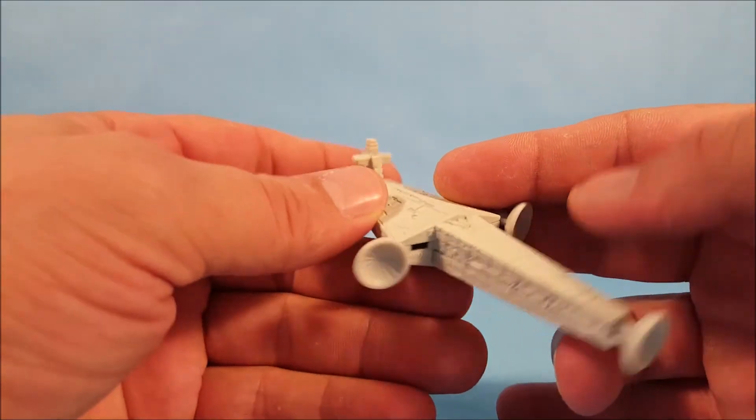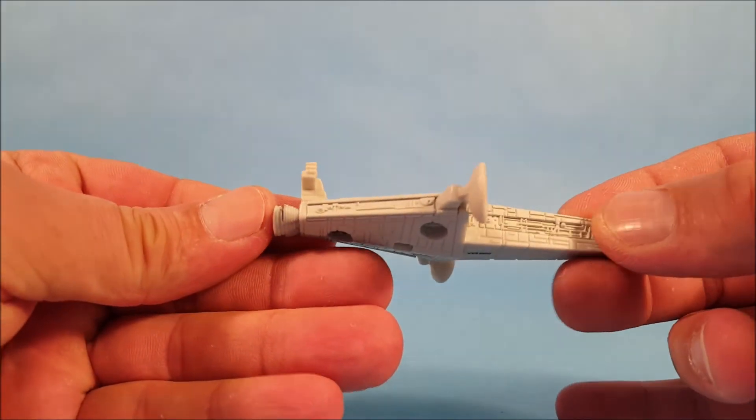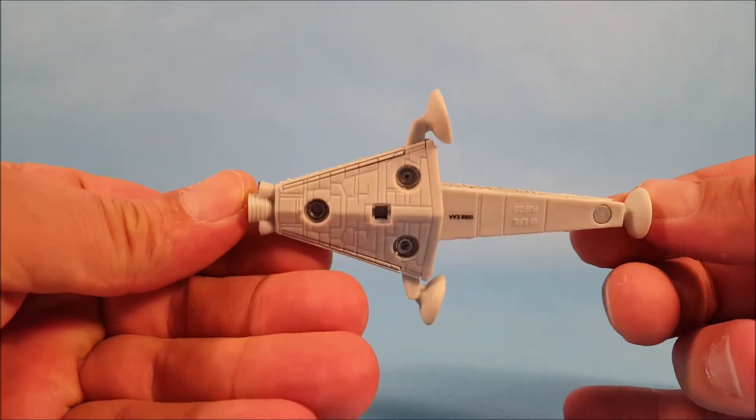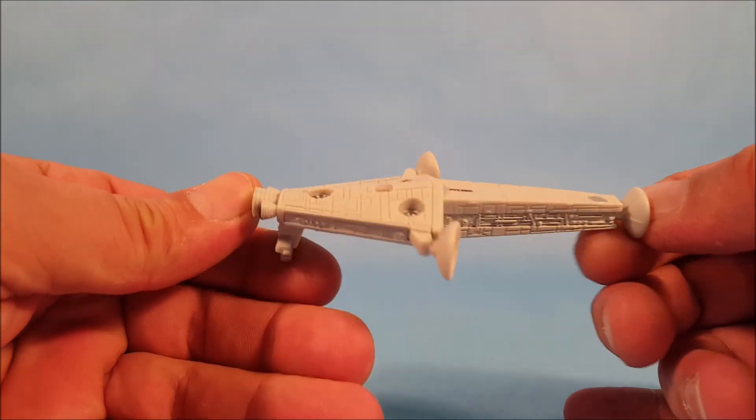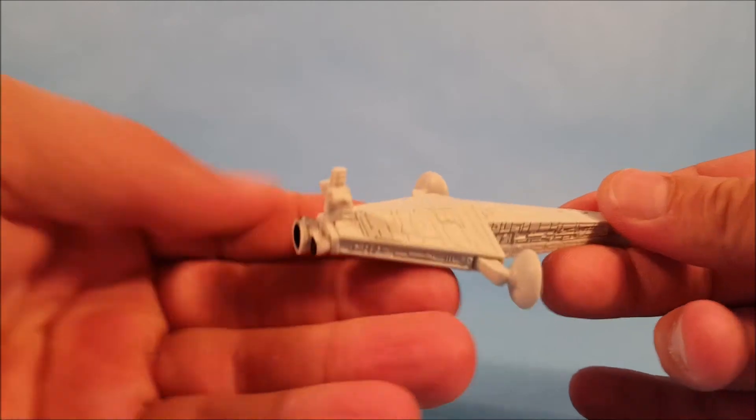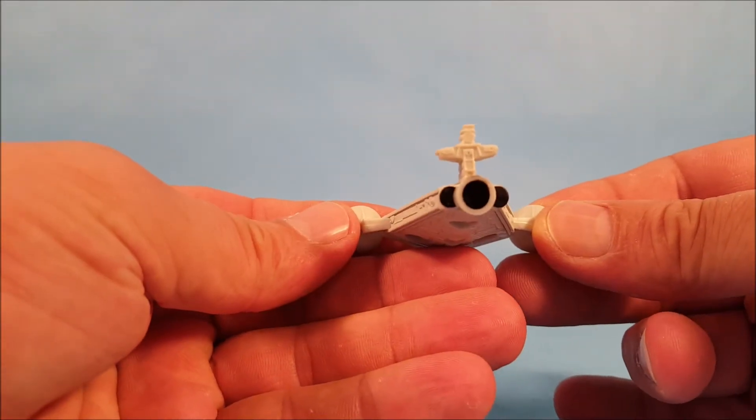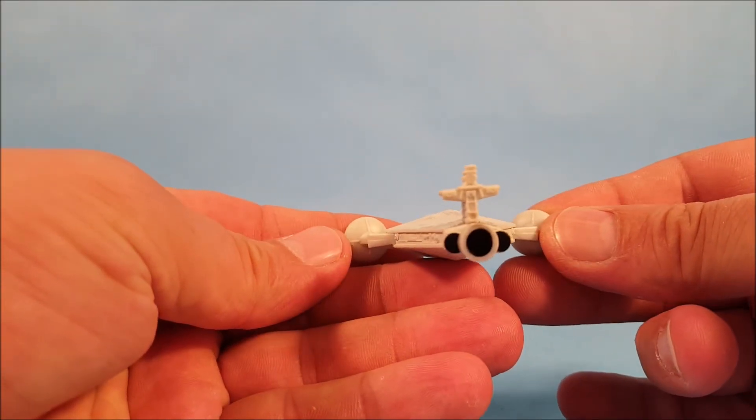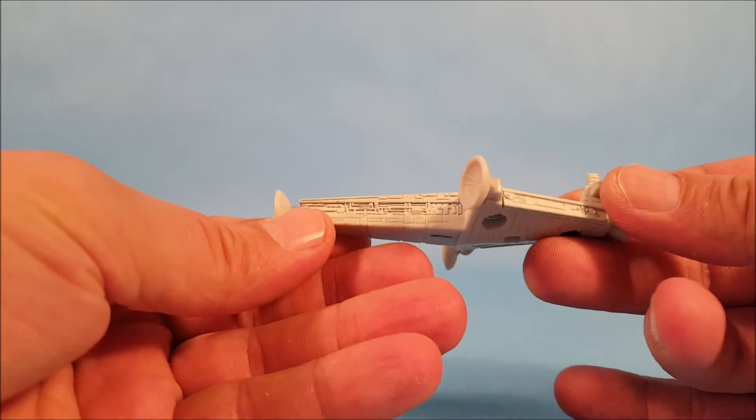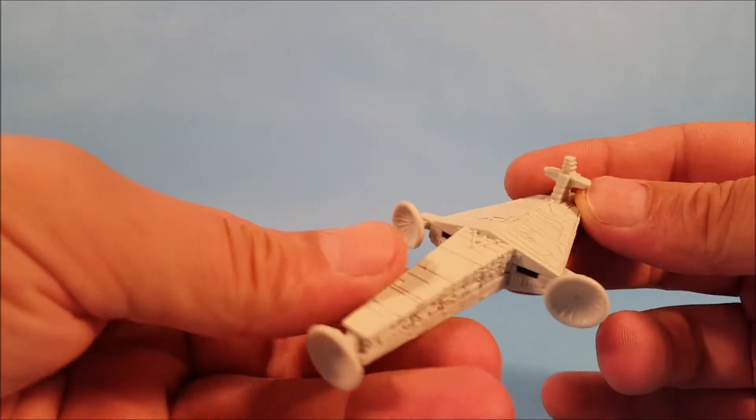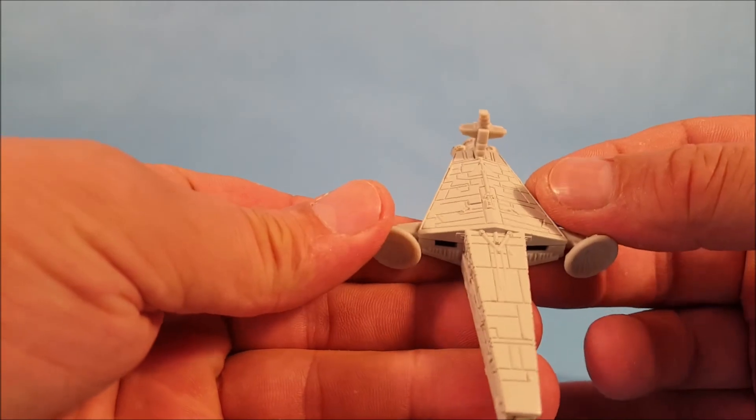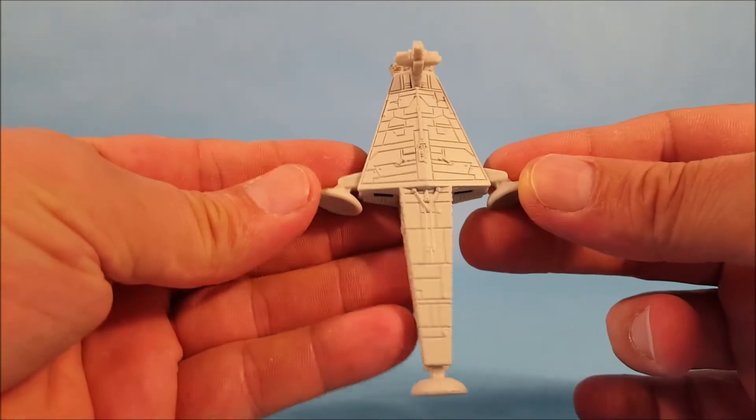But it is obviously some sort of Star Destroyer. Now what its actual true purpose is, we'll probably find out when the Solo movie is released. And you can see it has a small set of thrusters on the back. And I believe this vehicle is actually based off some old concept art for Star Destroyers before they finalized it.